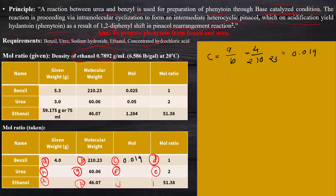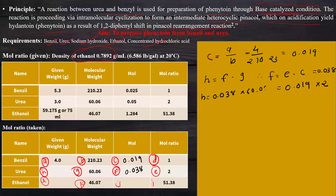Next, we find the total amount of urea to use. Using values E and C, where C is 0.019 and E equals 2, we get F equal to 0.038 moles of urea. Then H equals 0.038 multiplied by the molecular weight of urea, 60.06, giving the weight of urea as approximately 2.285 grams.